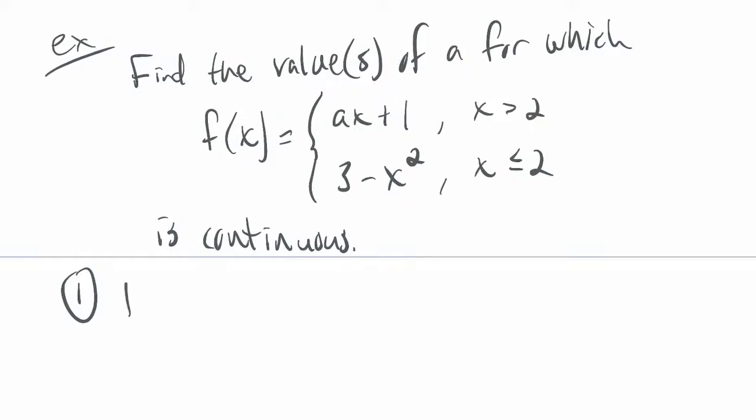So first of all, is f of 2 defined? Well, f of 2, that's going to be, since we're using 2, we're using the bottom formula. So we'll have 3 minus 2 squared. So 3 minus 4 is a negative 1, right? So yeah, that checks out. We have the function is defined there.